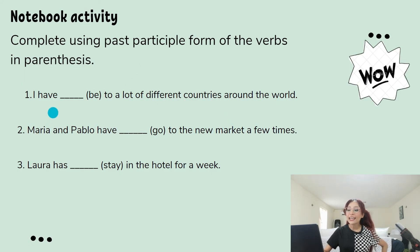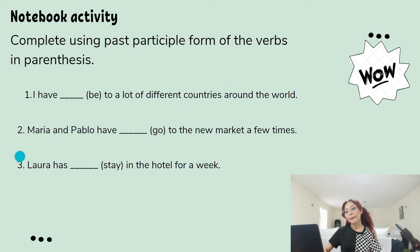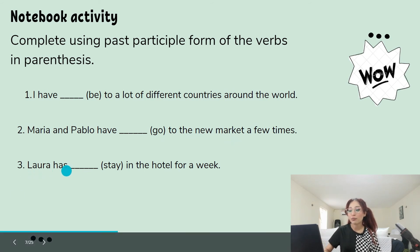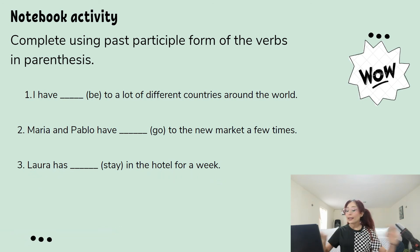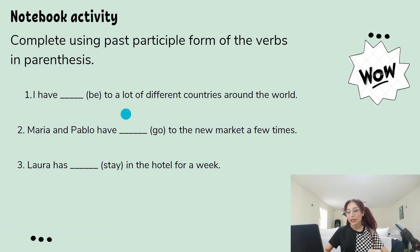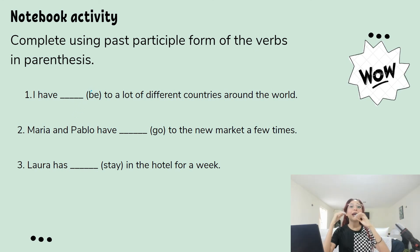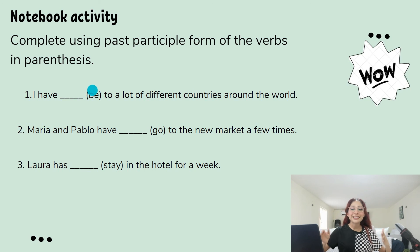Number one: I have blank (be) to a lot of different countries around the world. Number two: Maria and Pablo have blank (go) to the new market a few times. Number three: Laura has blank (stay) in the hotel for a week. You don't need to add the auxiliary verb have or has because I already gave it to you — you just need to write be, go, and stay in past participle. It is not that difficult, but if you have questions, please text me or send me a message.